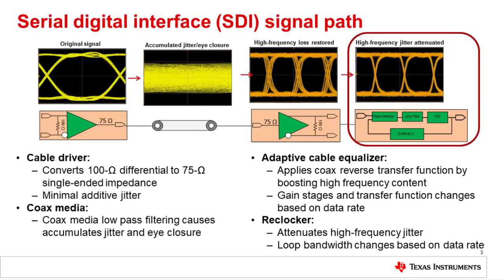Now let's look at coax cable characteristics in detail to see how it causes signal eye closure.